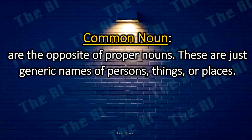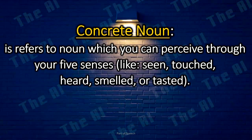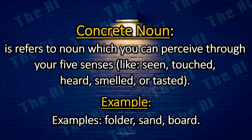Common nouns are the opposite of proper nouns. These are just generic names of persons, things, or places. Examples: car, pizza shop, home, man, kid. Concrete nouns refer to nouns which you can perceive through your five senses — seen, touched, heard, smelled, or tasted. Examples: folder, sand, board.